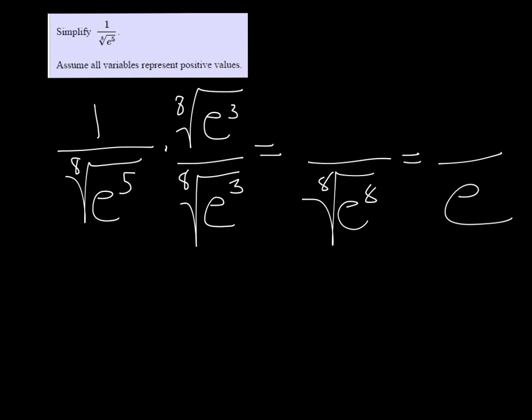and then the bottom is rationalized. The top is just going to remain the 8th root of e cubed.